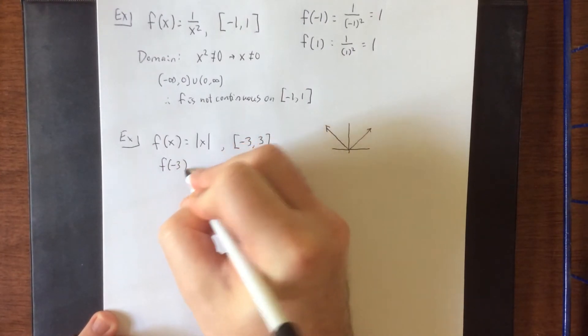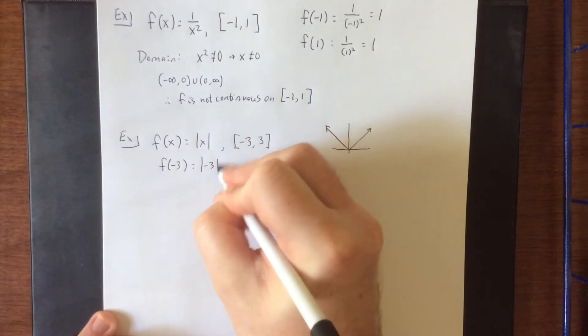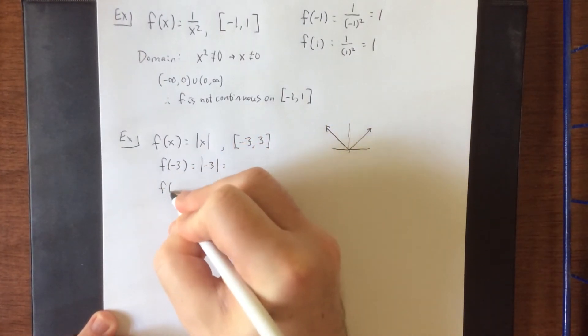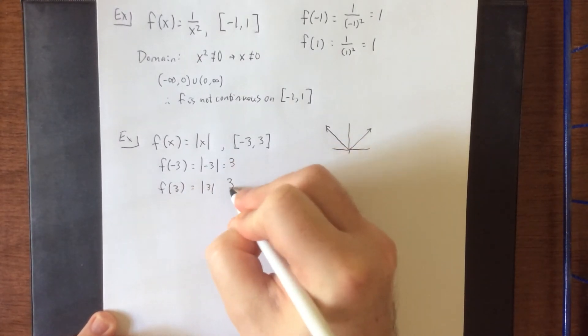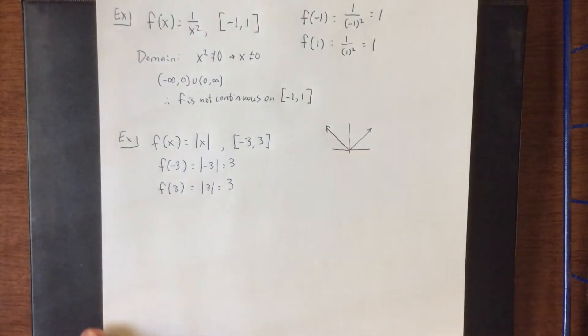Once again if we were to check the third hypothesis of Rolle's theorem, we would get the absolute value of negative 3 and the absolute value of 3. So again it looks like those y values are the same.